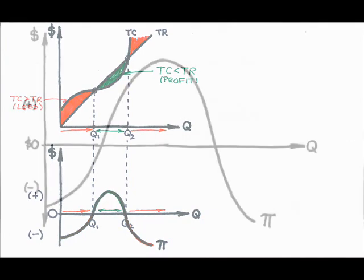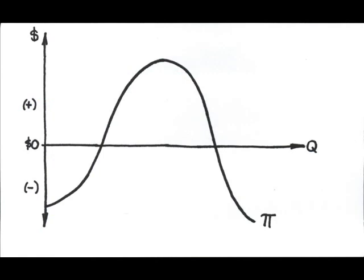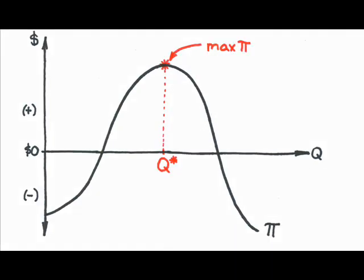what level of output would you pick if this for your business? As a profit maximizer, you would want to pick the level that yields the highest profit. In this diagram, that would be output level Q star.